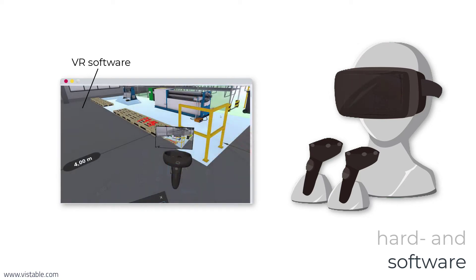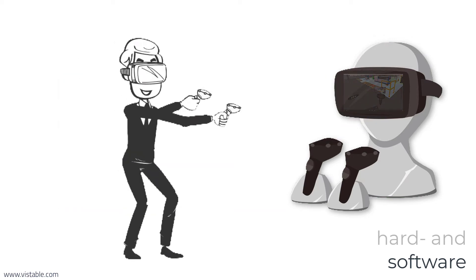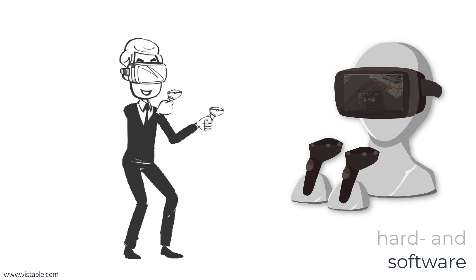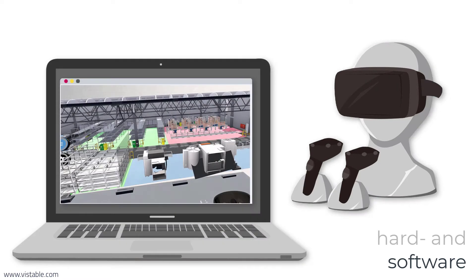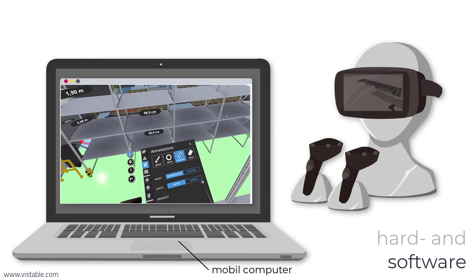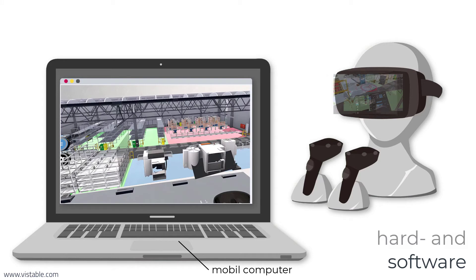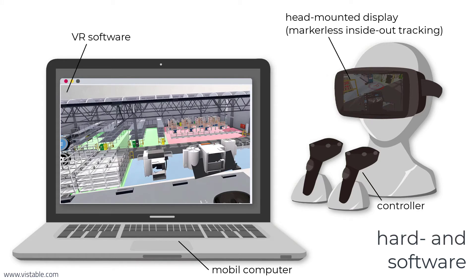In modern head-mounted displays, the computing unit is already integrated. In this case, you can transfer your planning models to the head-mounted display and operate them autonomously. Especially for mobile use, however, it is advantageous to use a mobile computer, so that you can quickly and flexibly upload new models to the head-mounted displays on-site if necessary. So these are the things you need.